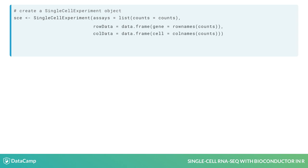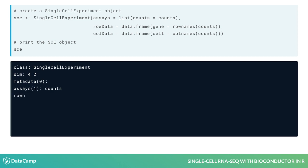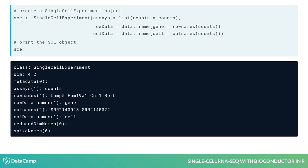The second and third arguments are rowData and colData for data frames with information about genes and cells. Here, we only store the gene and cell names, which are the row and column names of our matrix of counts. You see that we have created a SCE object with a dimension of four by two, and you can see the gene and cell names.